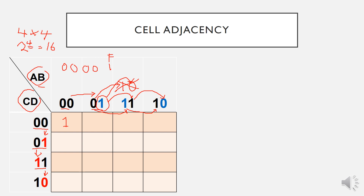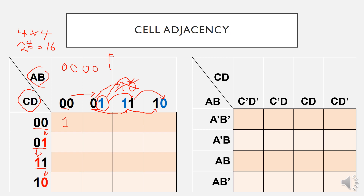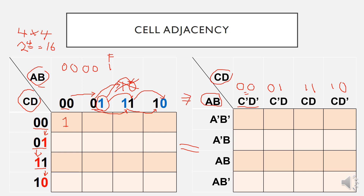This K-Map also represents the same mapping. We can place the input variables on either the lower or upper side — it is still the same. Instead of using 0, 0 to represent variables, we can also use the variable notation itself. For example, C-complement and D-complement equals 0, 0; C-complement D equals 0, 1; C D equals 1, 1; and C D-complement equals 1, 0. Please remember how to label this K-Map, and next I will explain how to insert the output values inside the K-Map.